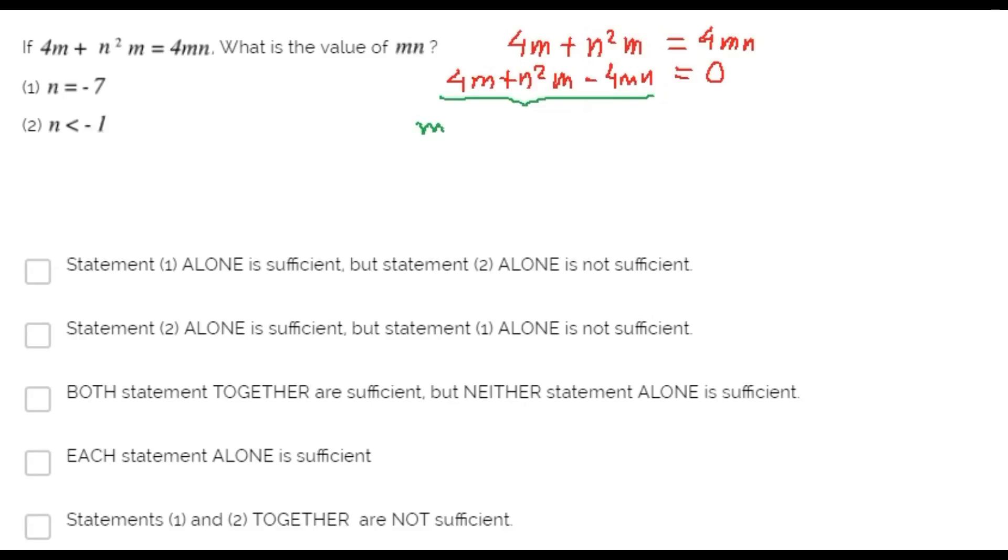It can be m times 4 plus n squared minus 4 times n. What's the factorization of this expression?